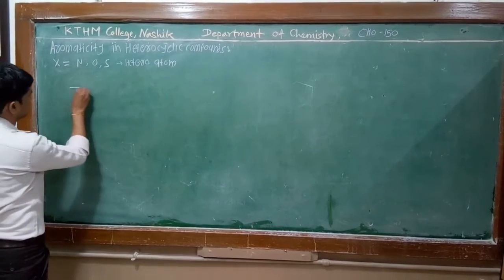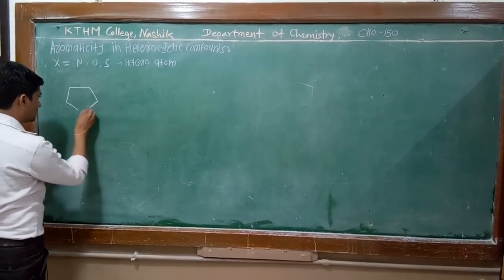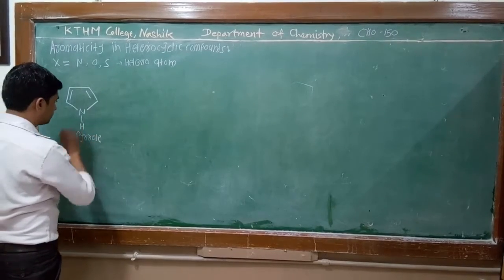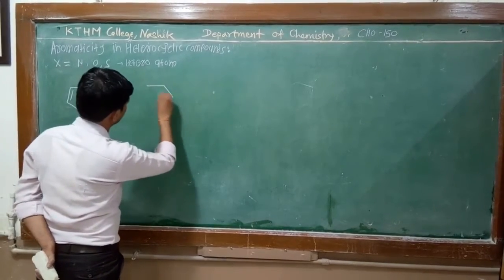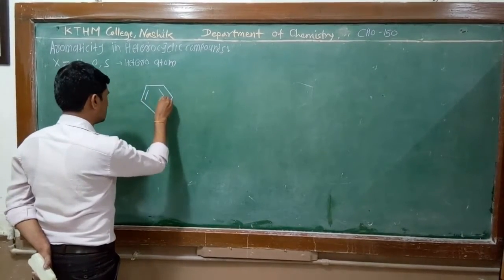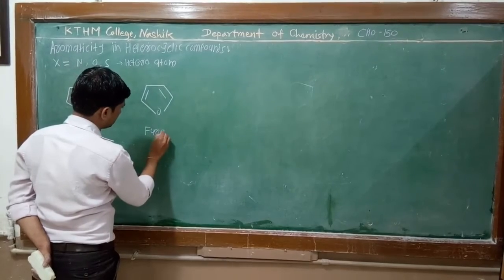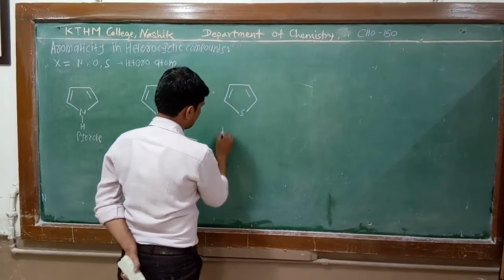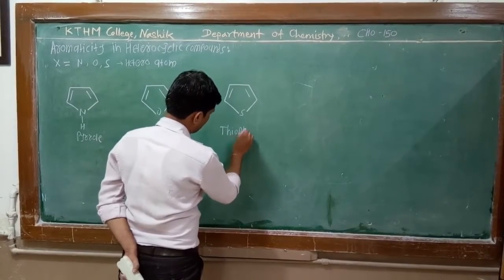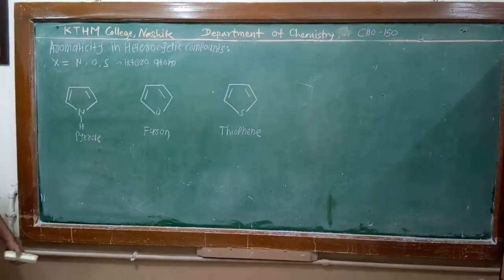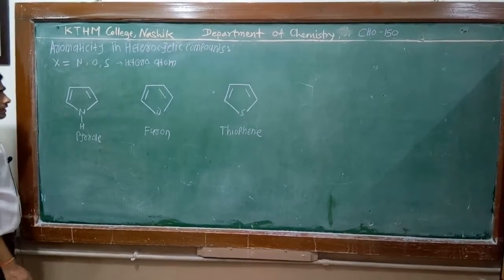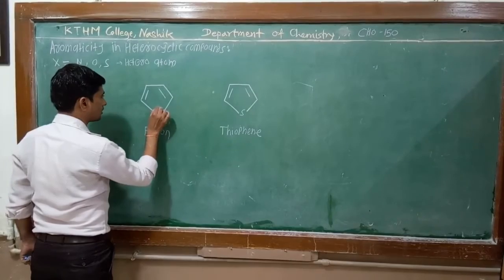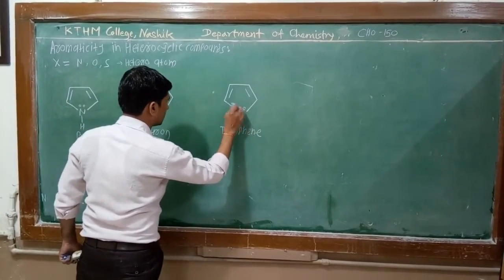In our syllabus there are 3 heterocyclic compounds: this is pyrrole, this is furan, and this is thiophene. These are 5-membered heterocyclic compounds, and in all these heteroatoms there is a lone pair of electrons which is conjugated to the remaining ring.